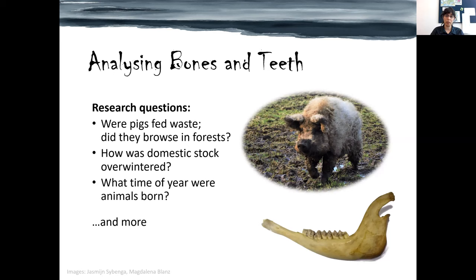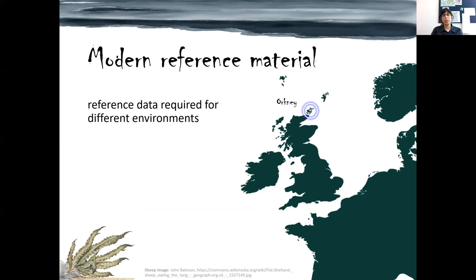Very important for this is that we need modern reference material because isotope ratios are affected by many different factors and can also vary between different climates. So without modern reference data, we don't really know what the numbers mean.